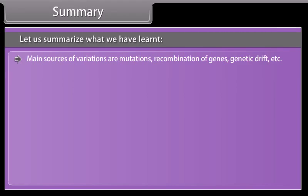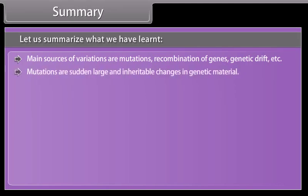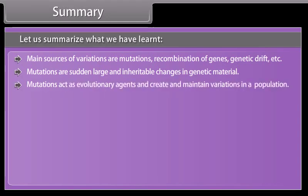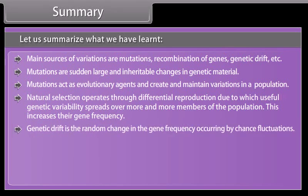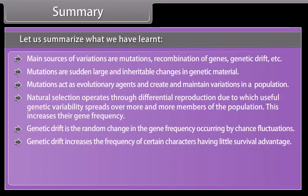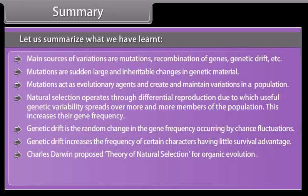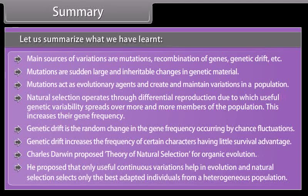Main sources of variations are mutations, recombination of genes, genetic drift, etc. Mutations are sudden, large, and inheritable changes in genetic material, and act as evolutionary agents to create and maintain variations in a population. Natural selection operates through differential reproduction, due to which useful genetic variability spreads over more and more members of the population, increasing their gene frequency. Genetic drift is the random change in gene frequency occurring by chance fluctuations, and increases the frequency of certain characters having little survival advantage. Charles Darwin proposed the theory of natural selection for organic evolution, proposing that only useful continuous variations help in evolution, and natural selection selects only the best-adapted individuals from a heterogeneous population.